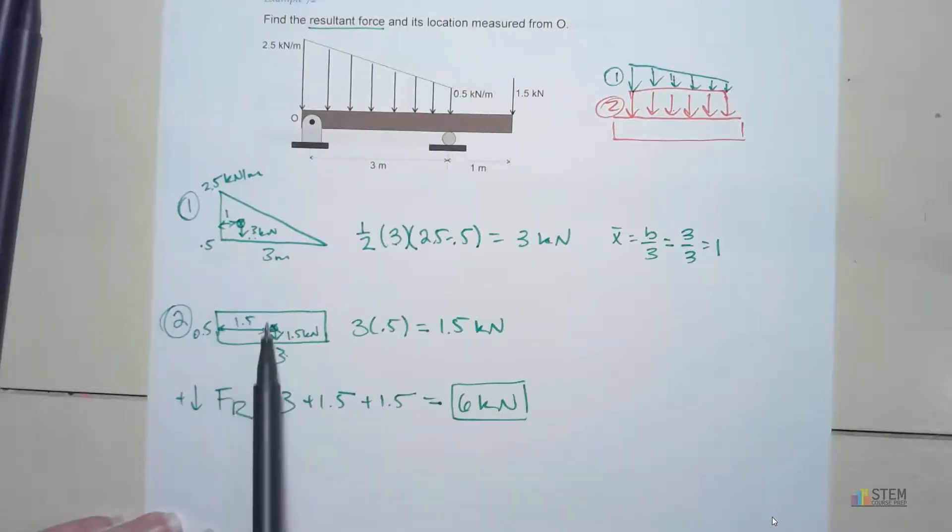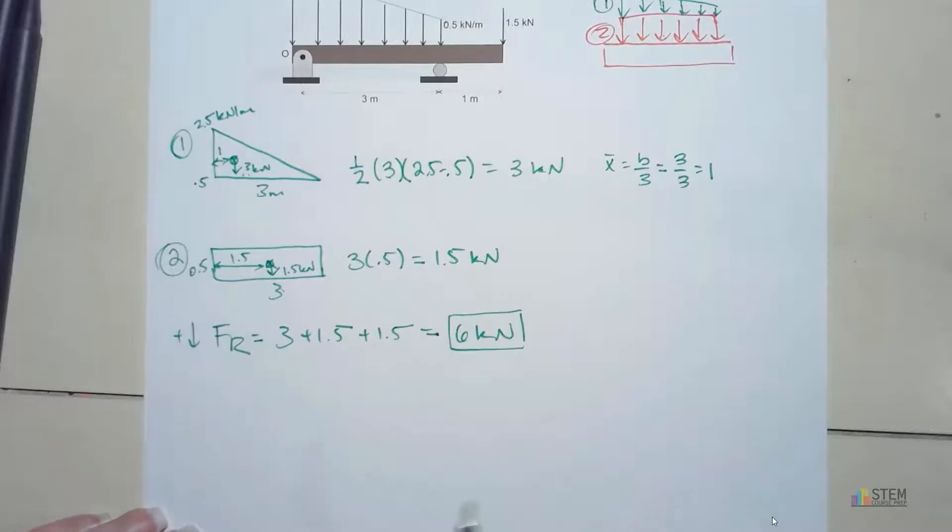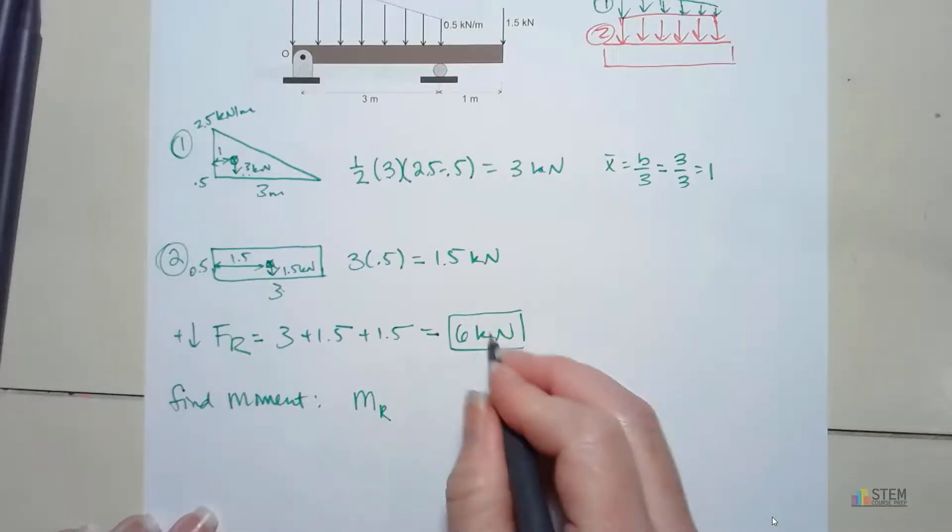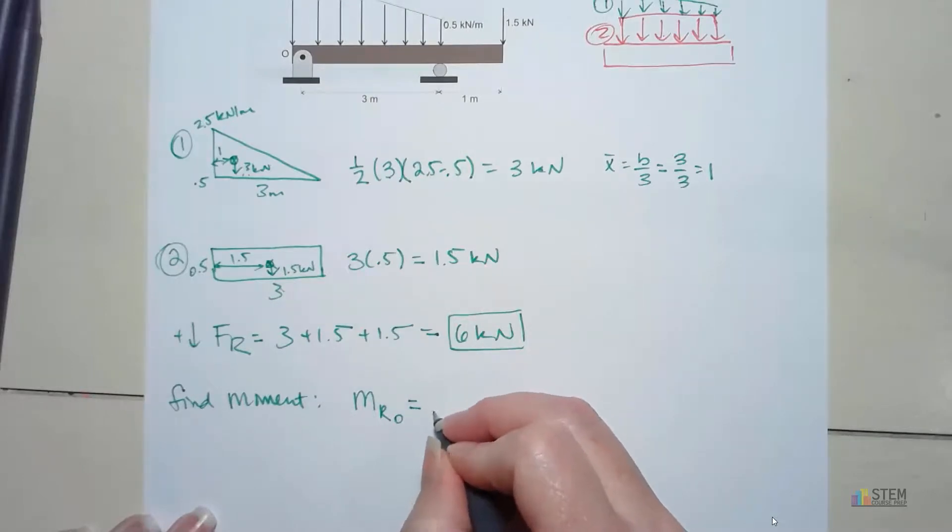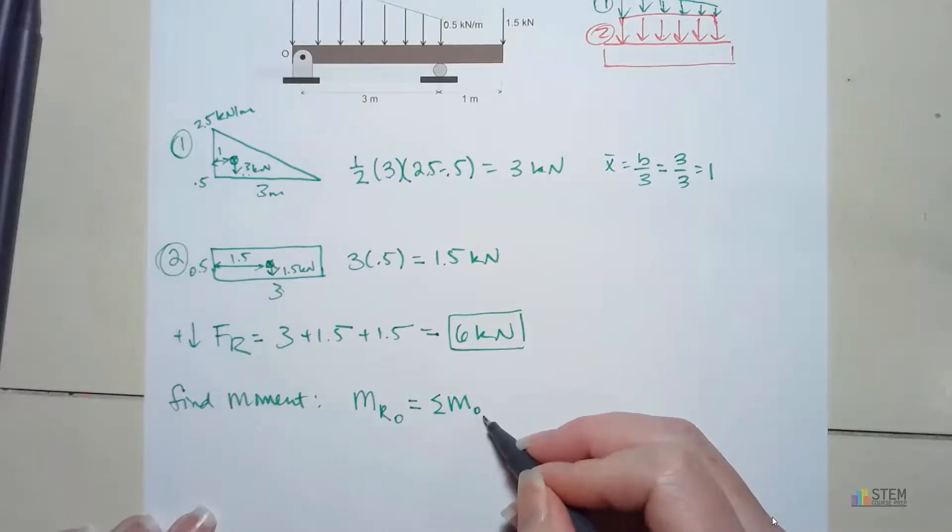So if you look at each of these that we had up here, one's over at 1, one's at 1.5. So we need to figure out a way to find the location of the resultant force for the whole system. The way we're going to do that is let's find the moment due to this resultant force about 0. And we want the same rotation as we have with this system. So then let's look and set this one equal to the summation of all of the moments created by the forces at 0.